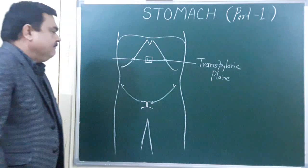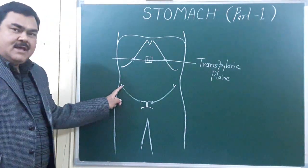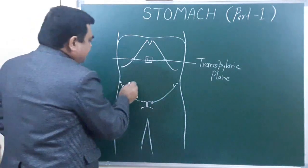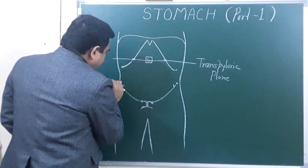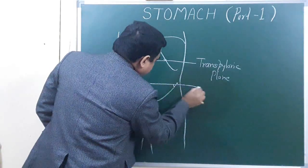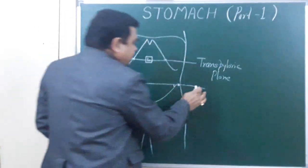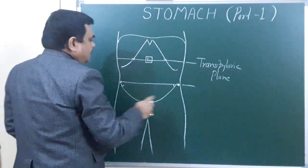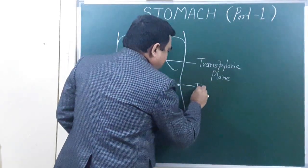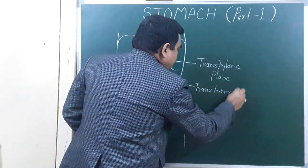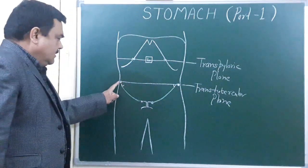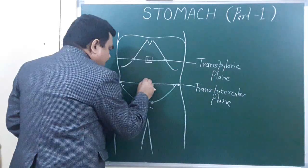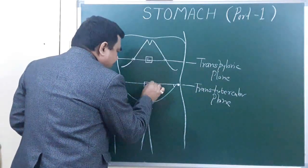The second horizontal line: here is the anterior superior iliac spine, and just posterior to this there is a tubercle — this is the tubercle of the iliac crest. Another line passes from the tubercle of the iliac crest. This line is the transtubercular plane, passing through the tubercle of the iliac crest.